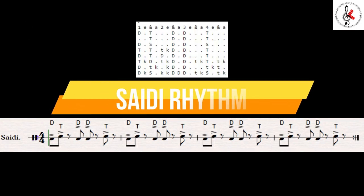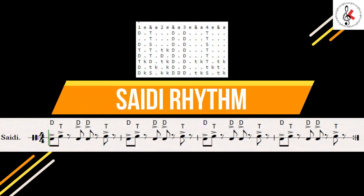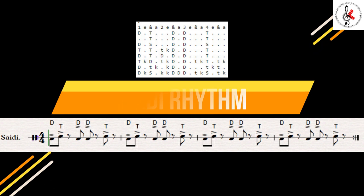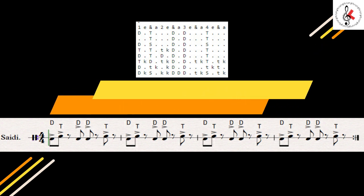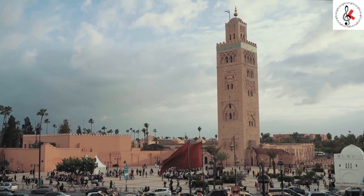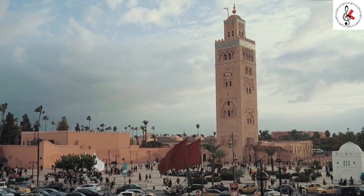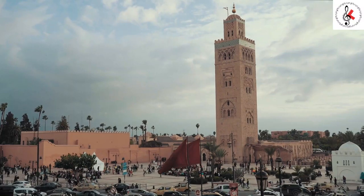The Saidi rhythm hails from Upper Egypt and is closely associated with the folkloric traditions of the region. It is a 4/4 rhythm with an accent on the 2nd and 4th beats. The Saidi rhythm is commonly used in traditional dance forms like Raks Sharqi, Egyptian belly dance. Let me show you how to play the rhythm.